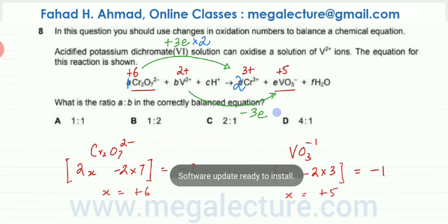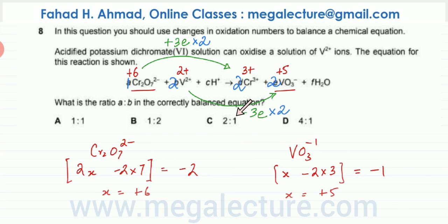That means that I would have to multiply vanadium by 2 as well, because the number of electrons that are lost, they should also be 6. So there should be 2 vanadiums on this side, and 2 vanadiums on the other side as well. So now the number of electrons that are being gained and that are being lost, they have become equal.